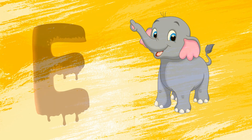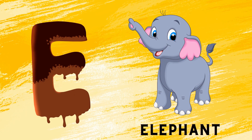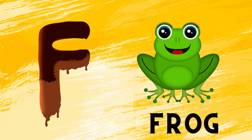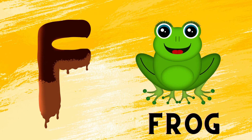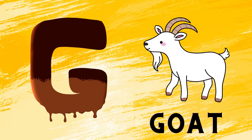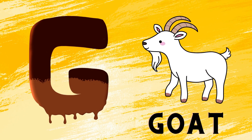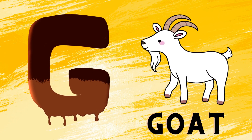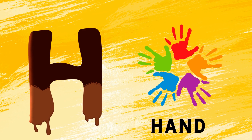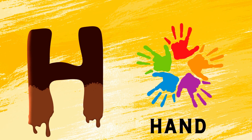E is for elephant, e-e-elephant. F is for frog, f-f-frog. G is for goat, g-g-goat. H is for hand, a-a-hand.